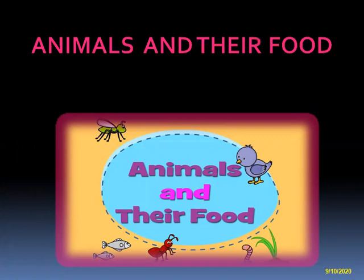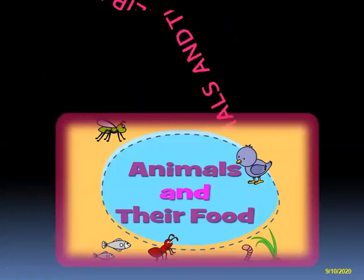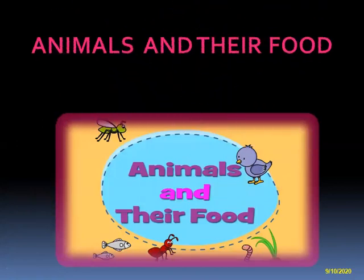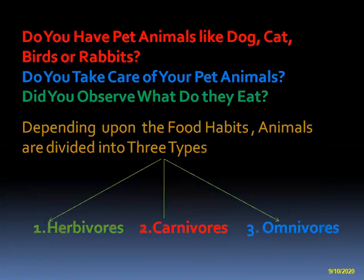Yes, see the picture. All the animals are in search of food. Animals and their food. Do you have pet animals like dog, cat, any birds, or rabbits? Did you observe how they eat? Did you take care of your pet animals? Did you observe their eating habits — what do they eat, how do they eat? Depending upon the food habits, animals are divided into three types.